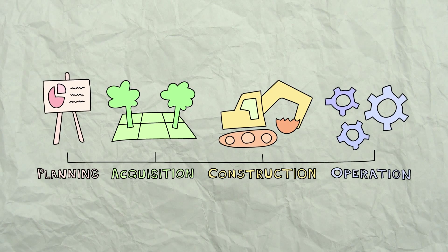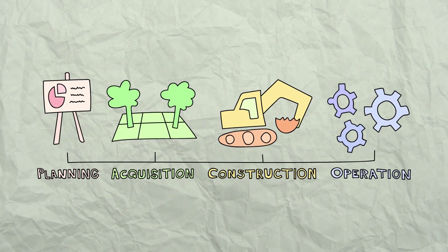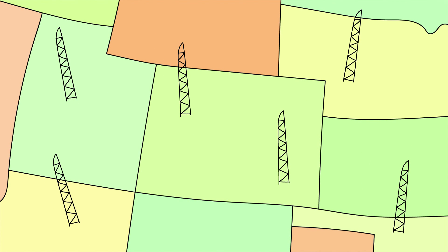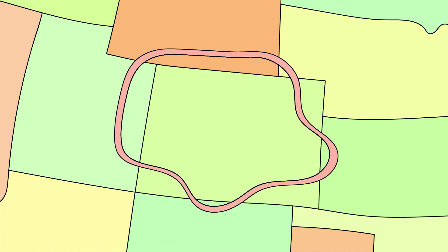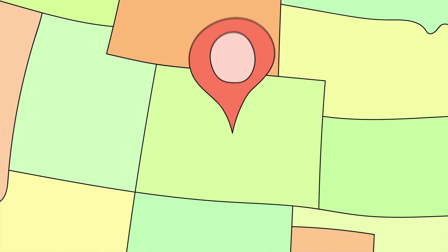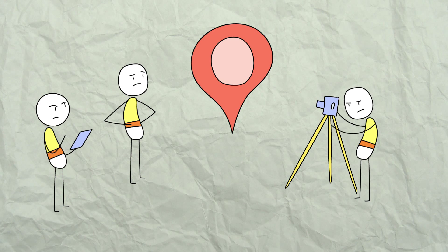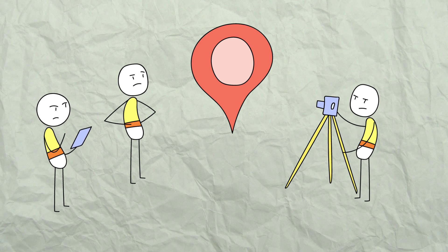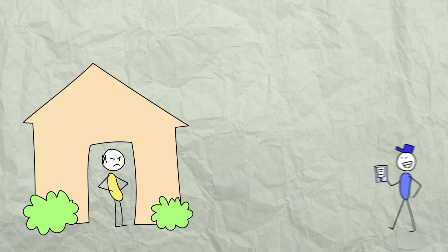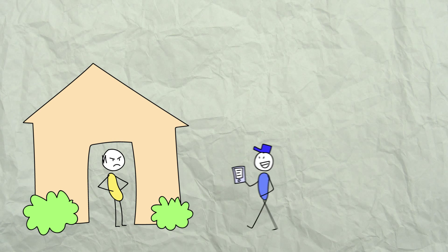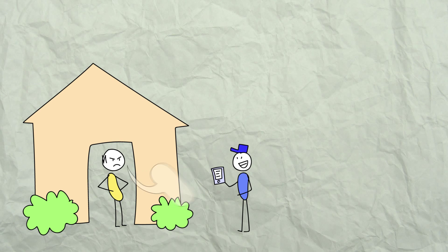No matter what phase you're in, use GIS maps for met tower planning and selecting sites. And since it's connected to our web platform, you can use it to communicate with your entire organization, managing your workforce by giving them access to project data and notifications in the field.